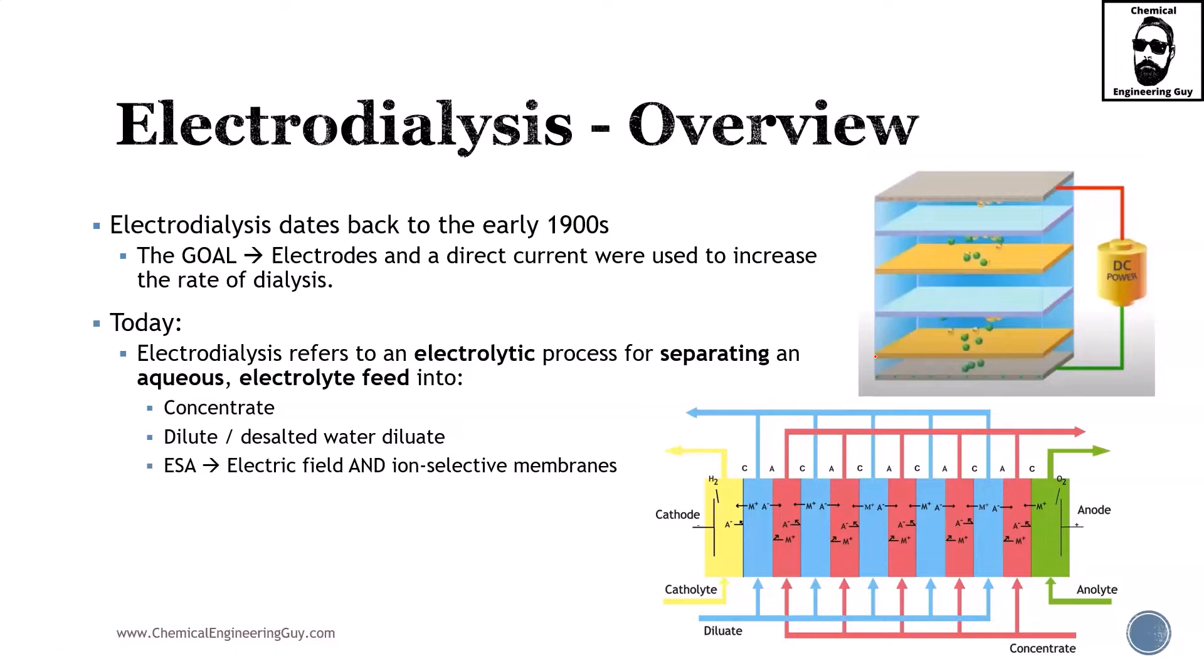Actually, it dates back to the early 1900s. The main goal was to add electrodes and direct current to increase the rate of dialysis—that was the straightforward approach. Today, we have much more sophisticated electrodialysis. We typically refer to the cathode, the anode, catholyte, anolyte, diluate, and concentrate.